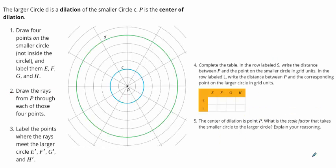Okay, problem number one. It says the larger circle D is a dilation of the smaller circle C, and P is the center of dilation. Number one says draw four points on the smaller circle — not inside the circle — and label them E, F, G, and H. So you can pick any points along the smaller circle and label them E, F, G, and H.